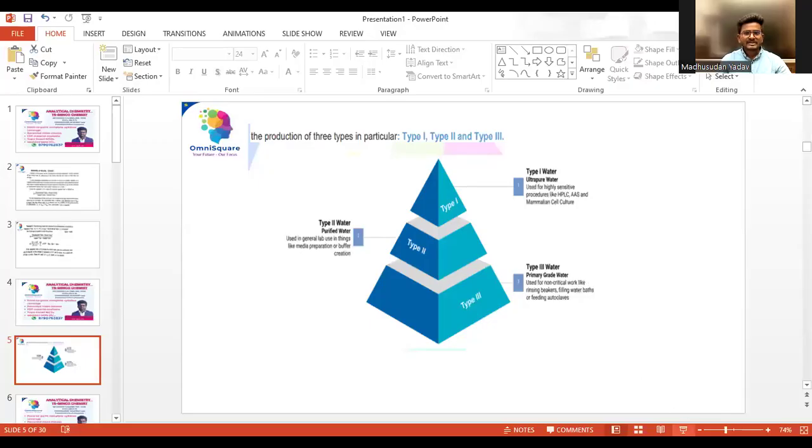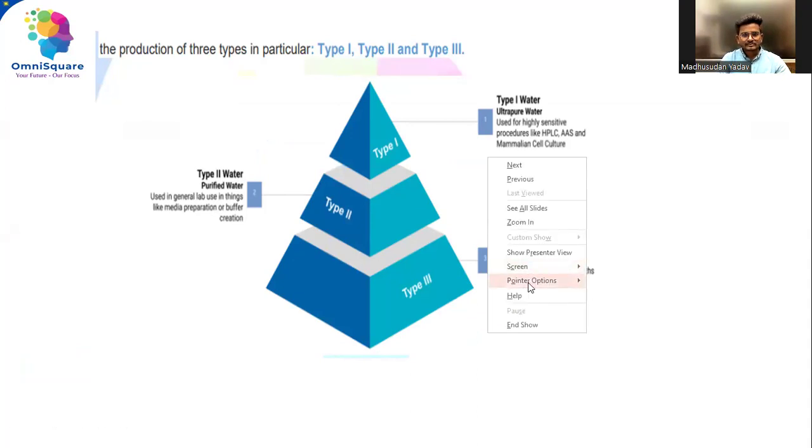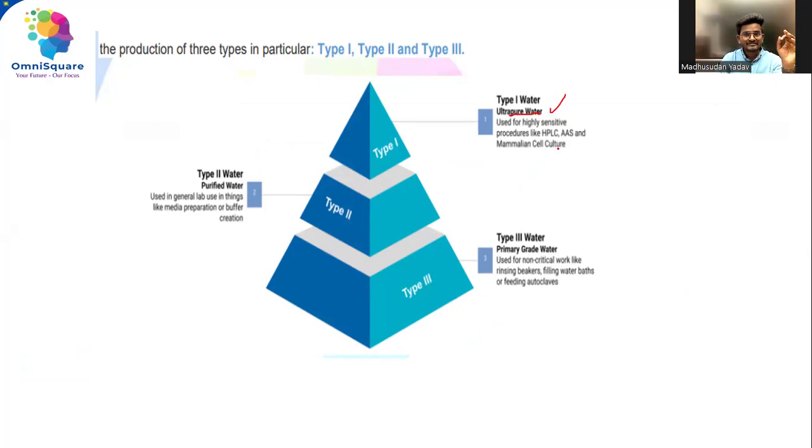So guys, have a look at this. These are the three types of water. You can name it as types or grades of water. Both are the same. Here type 1 water is given. Type 1 water, it is an ultra-pure water. It is a highly ultra-pure water.